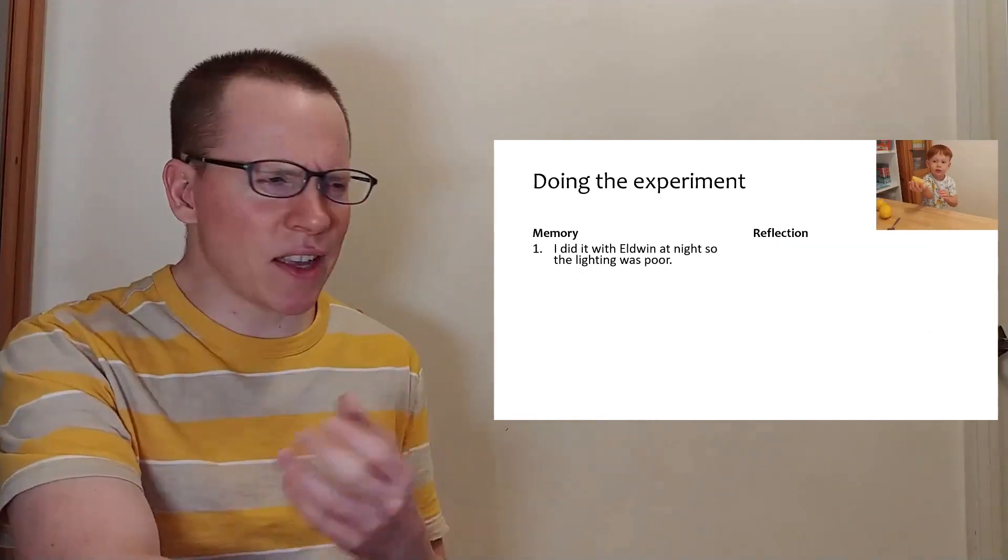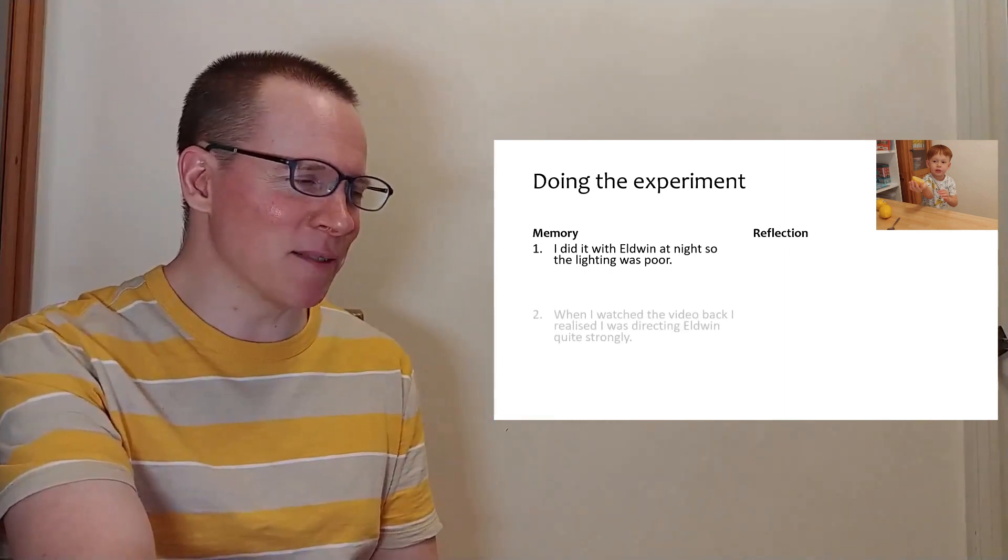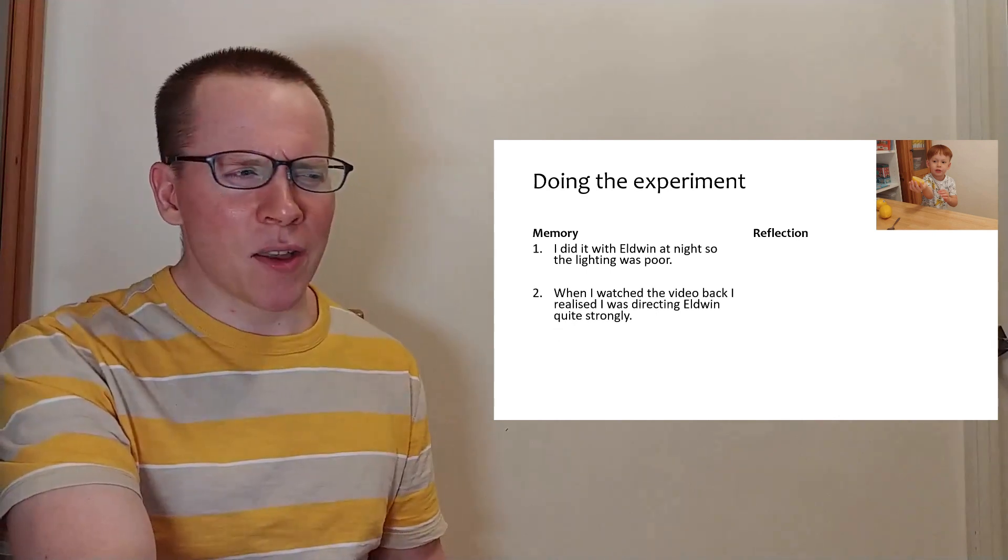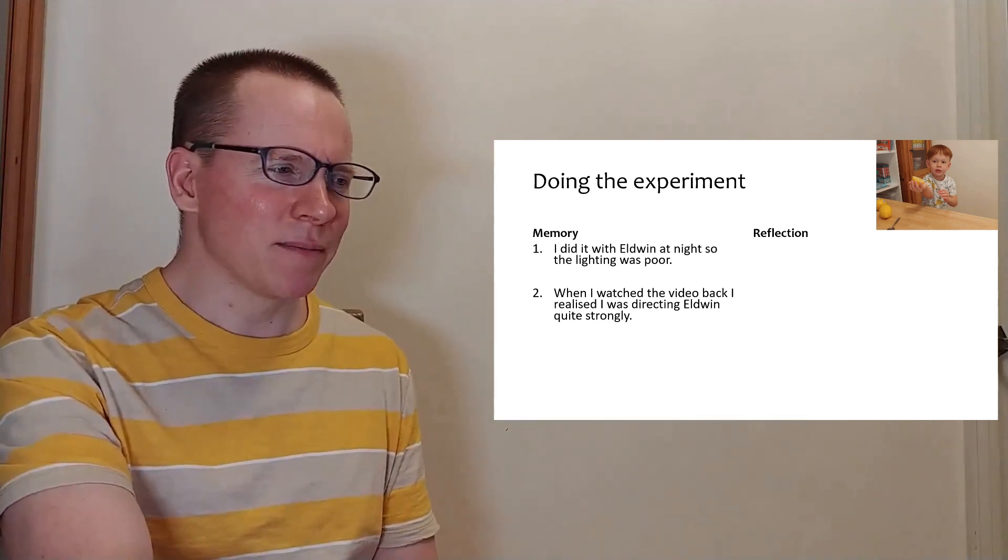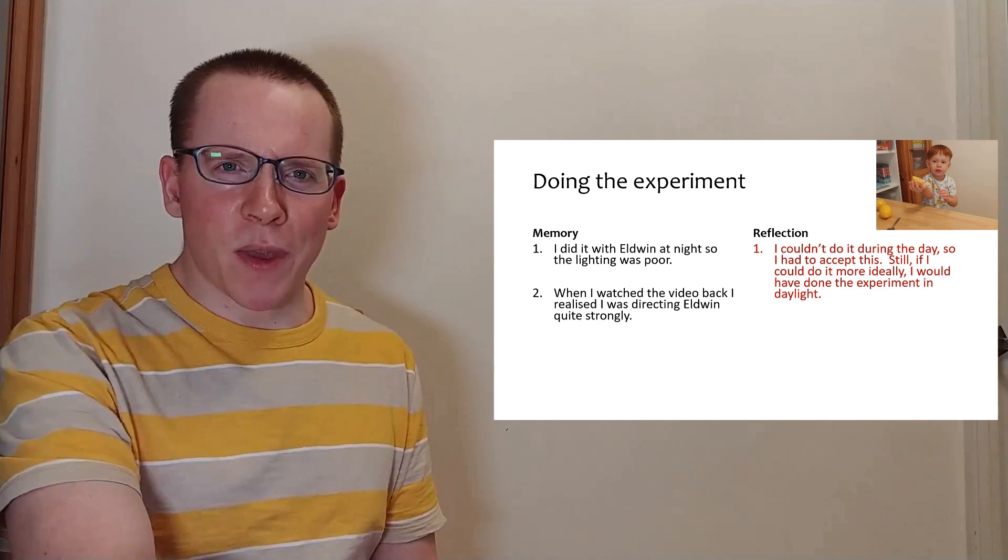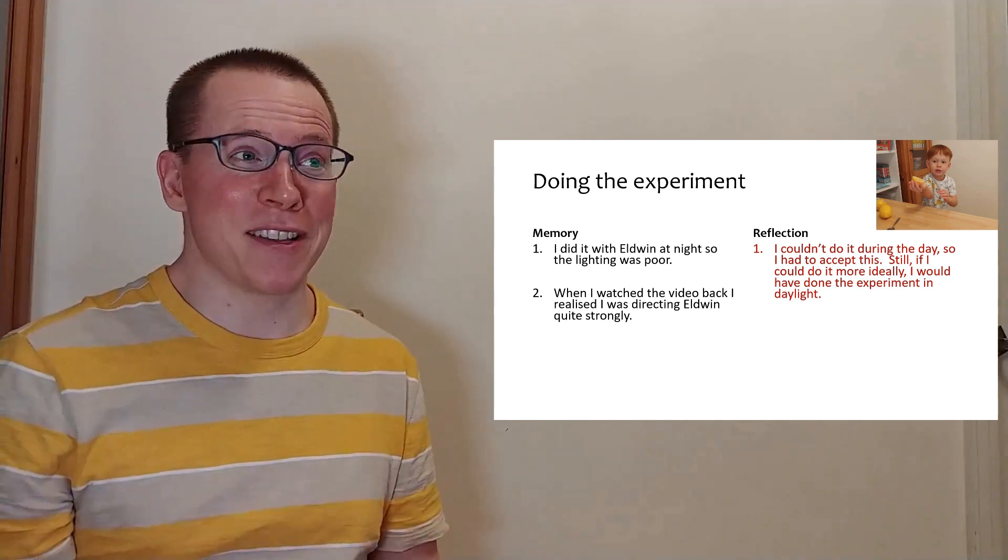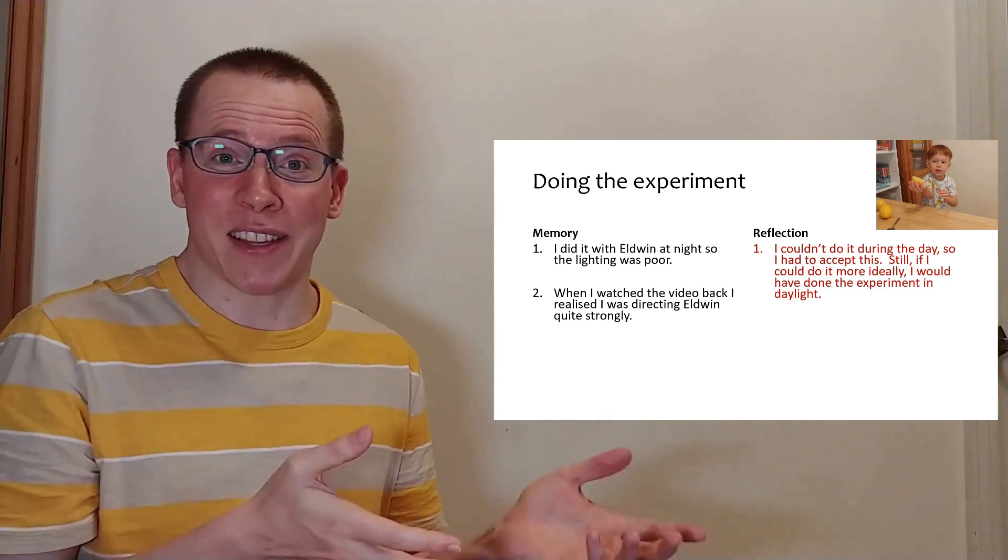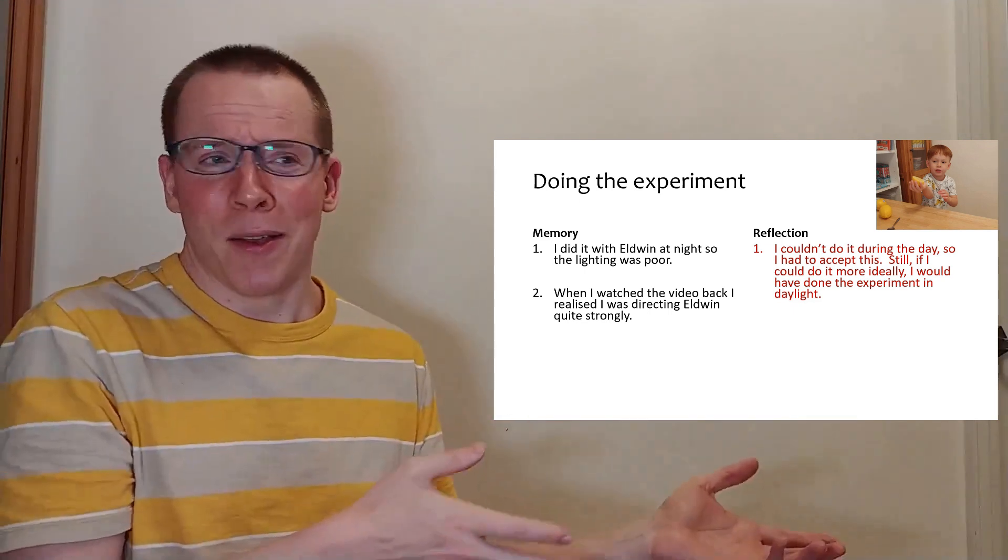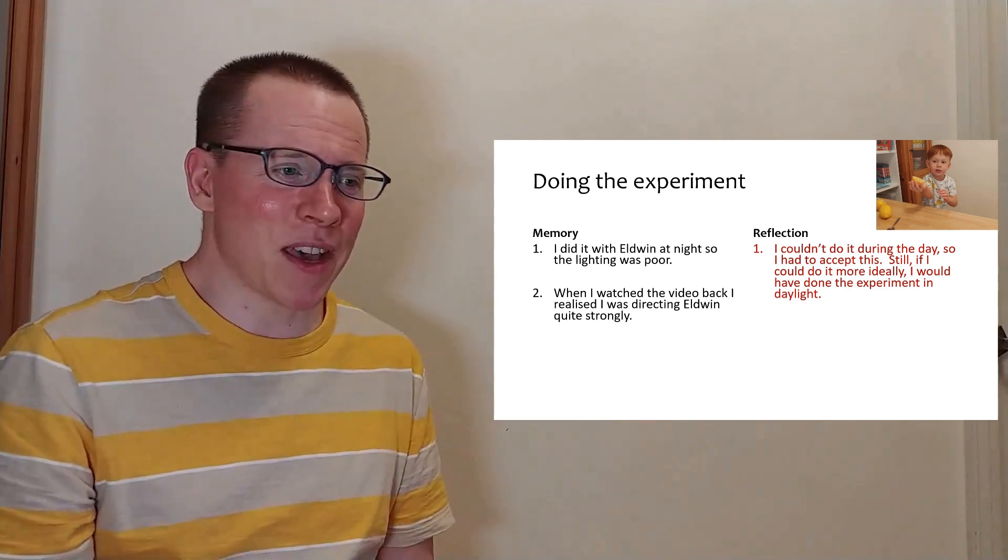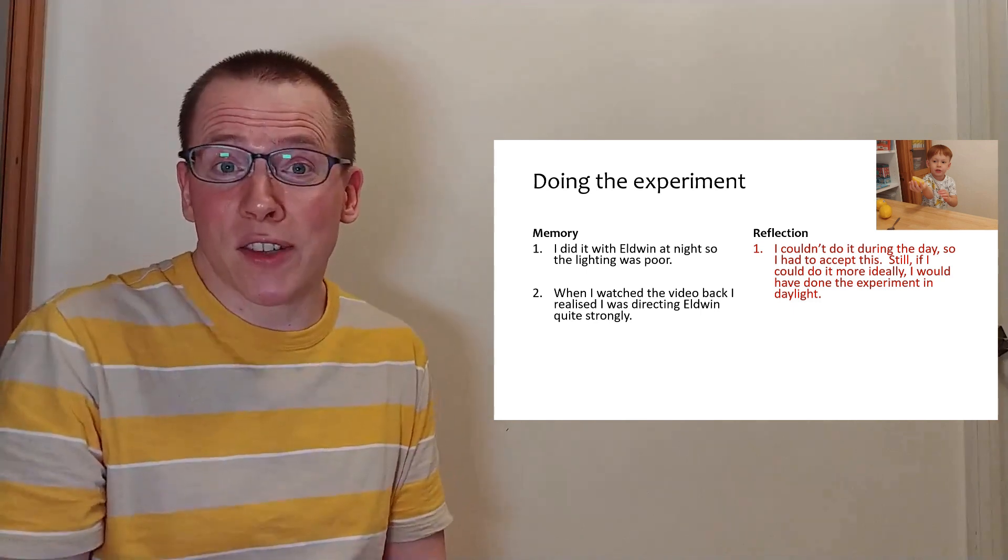I remember that I was doing it at night time and the lighting was not so good. And it was in this location, if you recognize it. And I remember when I watched the video back, I felt like I was directing my little boy quite strongly. This is something that's very difficult for me because of having my children. So around the daytime, it's very difficult to film with them. And so that's why I was filming at night. It's especially because my little girl, and if I was doing it with Elton, that's okay. But doing it with my little girl, it would have been very difficult to do that at the same time. That's just something I have to accept. I'm not sure I really could have done that differently. But I would try to look for opportunities to do it in the daylight.